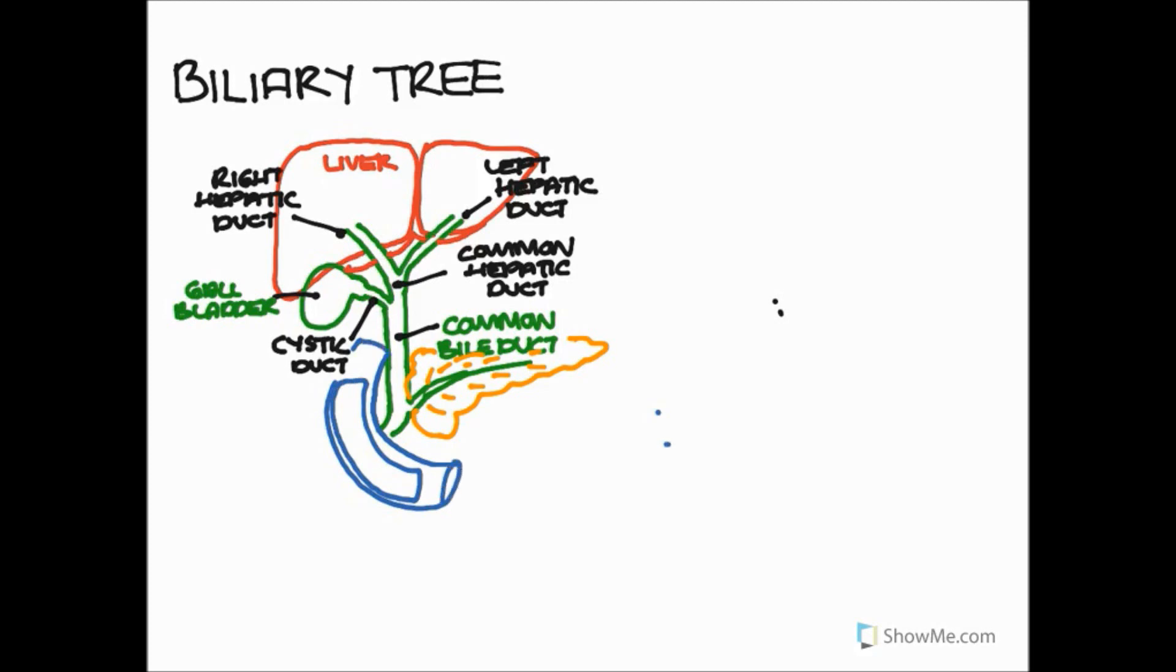Now what I'm drawing on here in blue is the duodenum—well, a section of the duodenum, obviously it's not got clipped ends like that. And this little squiggle in the middle that I've just drawn is the sphincter of Oddi, which is where the ampulla of Vater opens out into the duodenum.